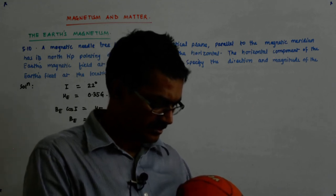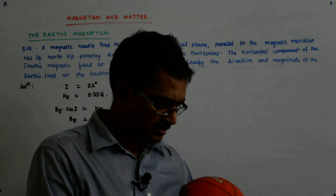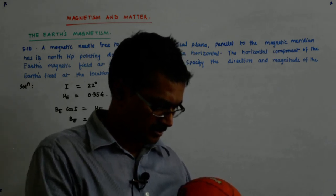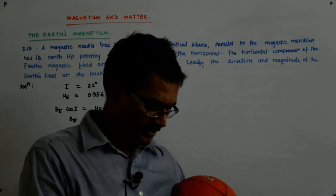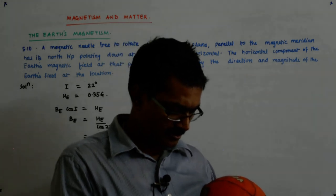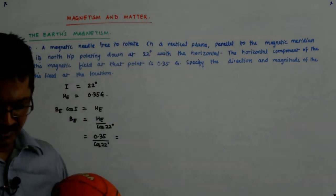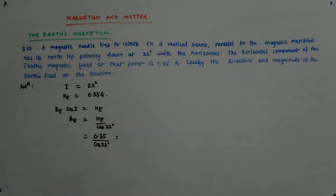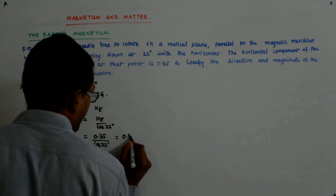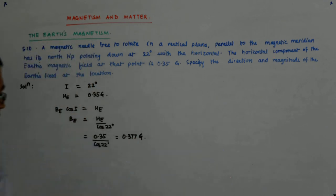0.35 divided by cos 22. Just a sec. So 0.35 divided by cos 22 is equal to 0.377, okay? So this is 0.377 Gauss. They have given the answer just like that.